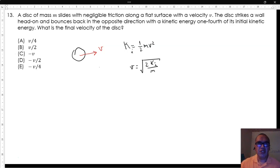After bouncing back, the disk has one-fourth of the kinetic energy. So the final speed is equal to the square root of two times one-fourth times the kinetic energy divided by the mass.